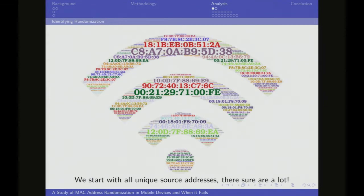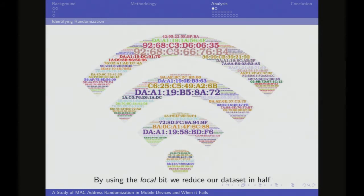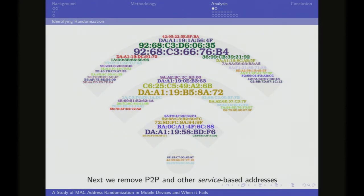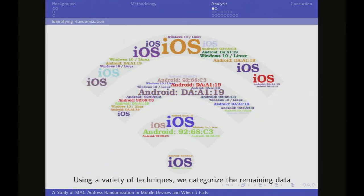We started with hundreds of thousands of MAC addresses. The first thing we did was weed out everything that didn't have the local bit set, leaving about half our dataset as locally assigned. Next, we pulled apart all the peer-to-peer and service-based addresses — things like Nintendo or using peer-to-peer on your mobile device in hotspot mode have the local bit set but aren't doing randomization. Lastly, we categorized what was left as iOS, different types of Android, or Windows 10 randomization.